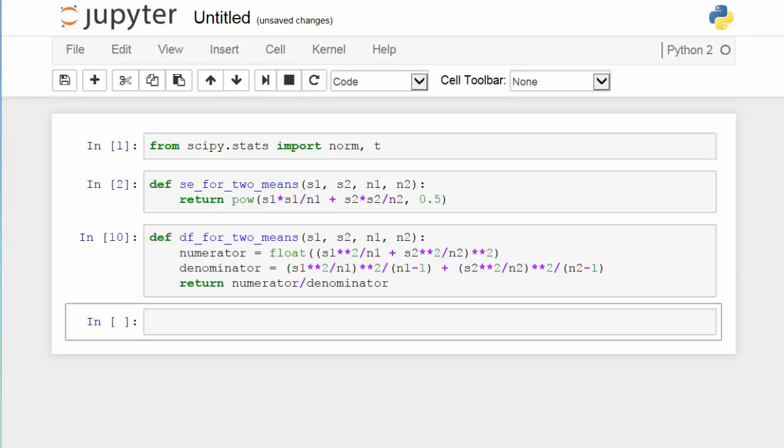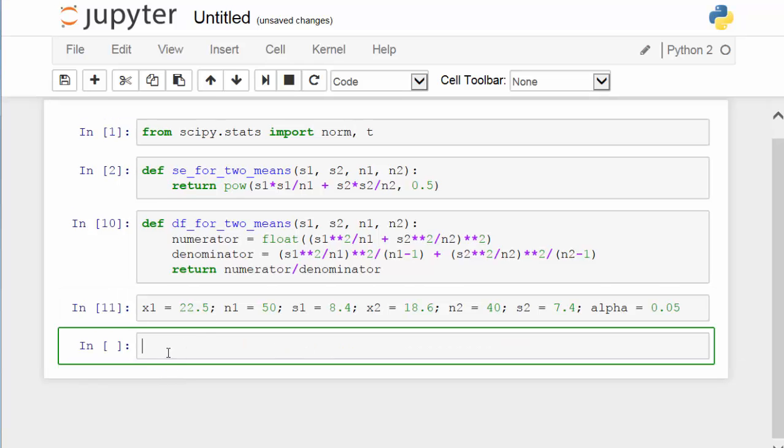Next, I am going to collect information from the problem statement. X1 is simply x bar, which is equal to 22.5 miles per day for Buffalo residents. And X2 or x2 bar is equal to 18.6 miles per day for Boston residents.